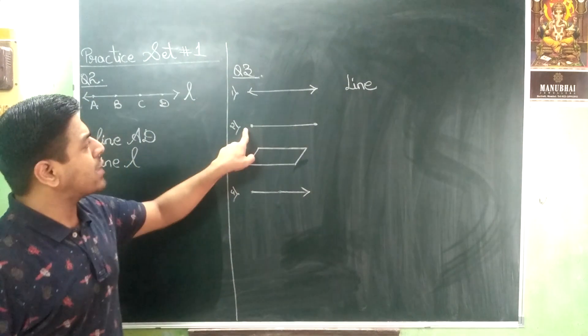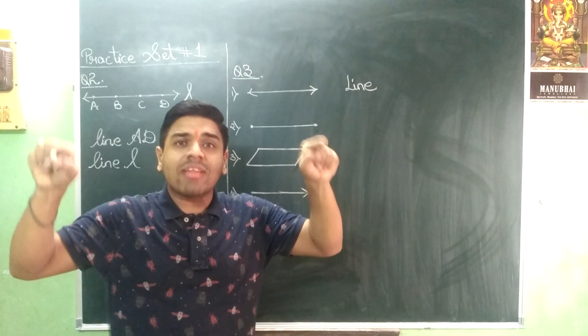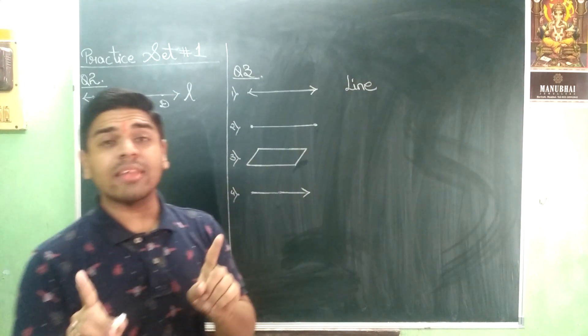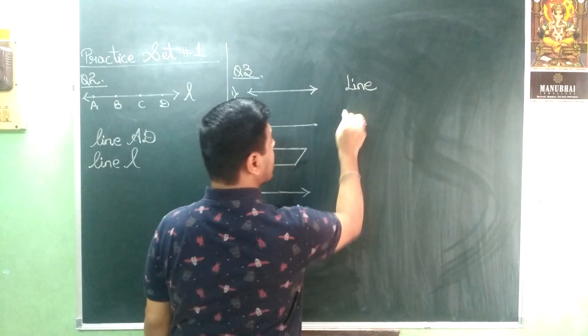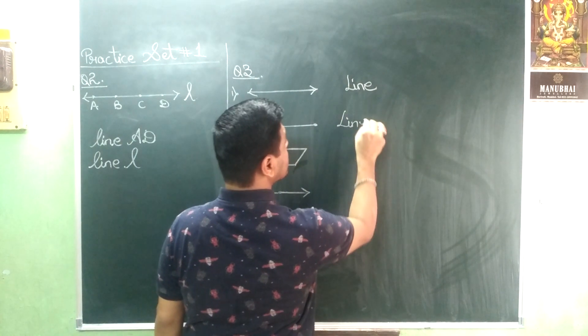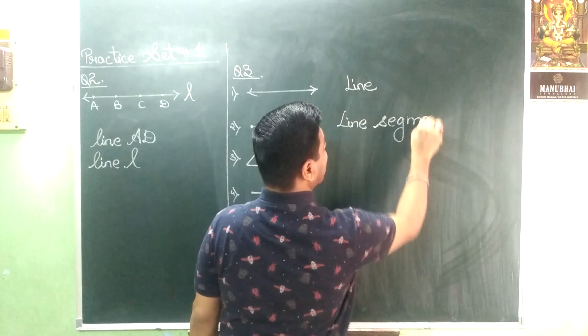Followed by there are two points at the end. And when two points are at the end it means it is a line segment. So I will be writing here line segment.